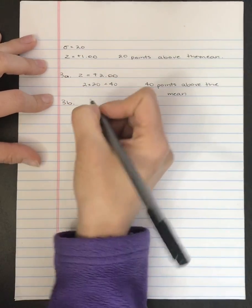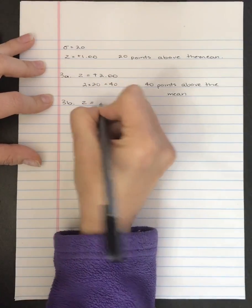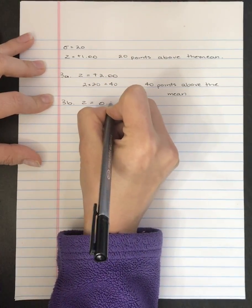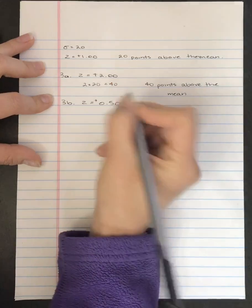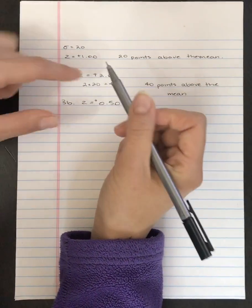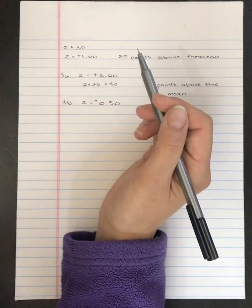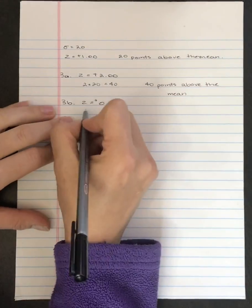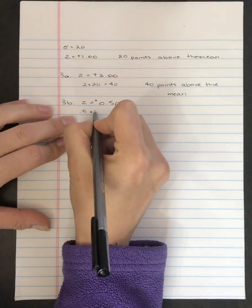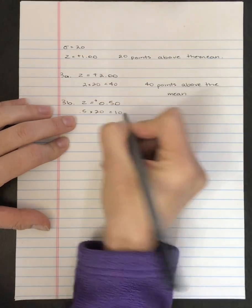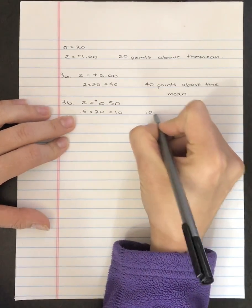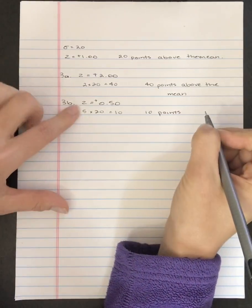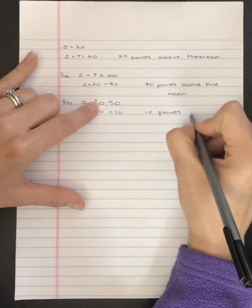3b has a z-score of equal to 0.50 plus. And where I'm getting these z-scores, the plus 2, the plus 0.5, that's from the question in the book. So 0.5, we take 0.5 times 20, and that's 10. So it is 10 points, and because it's positive, it's above the mean.